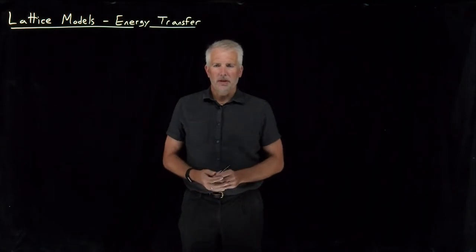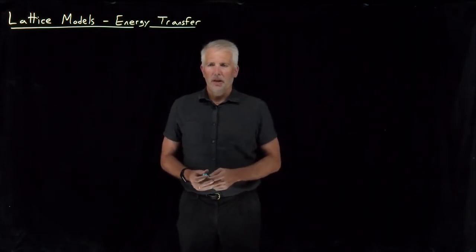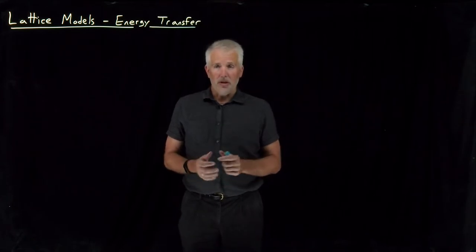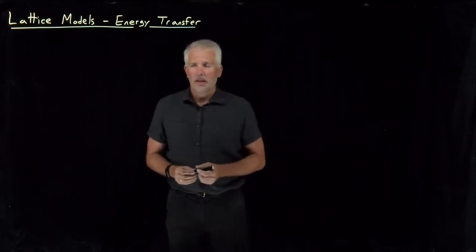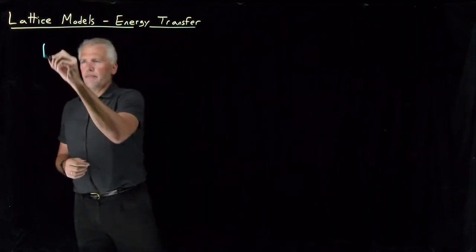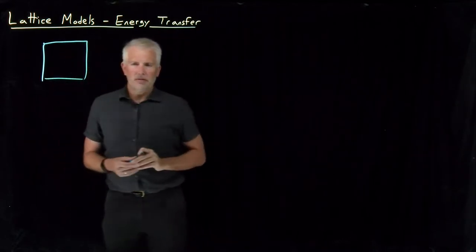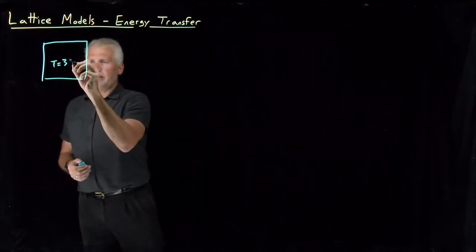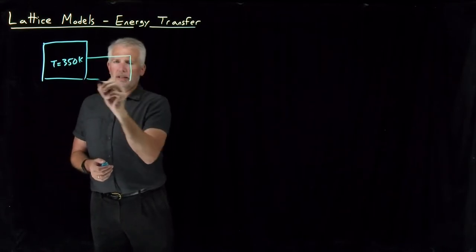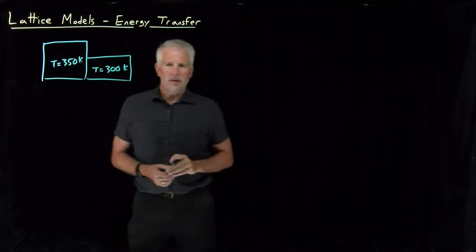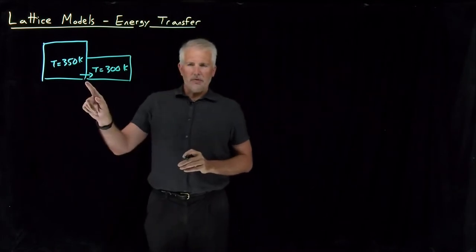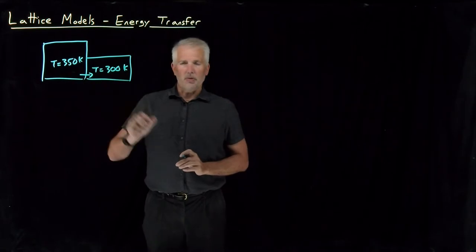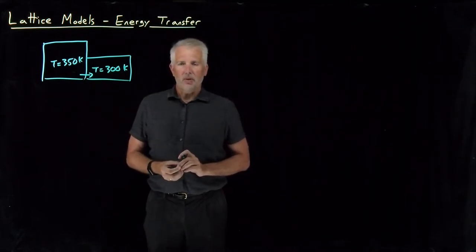We've seen how lattice models can be useful in a number of different circumstances, but we don't have to use lattice models just to describe where molecules are and how they move from place to place. We can also use lattice models for other circumstances, like how energy transfers from one molecule to another in a system. This is useful for examples like a block of metal at some elevated temperature in thermal contact with another material at a colder temperature. We know energy is going to be transferred as heat from the hotter system to the colder one, and lattice models can help us understand why that happens.